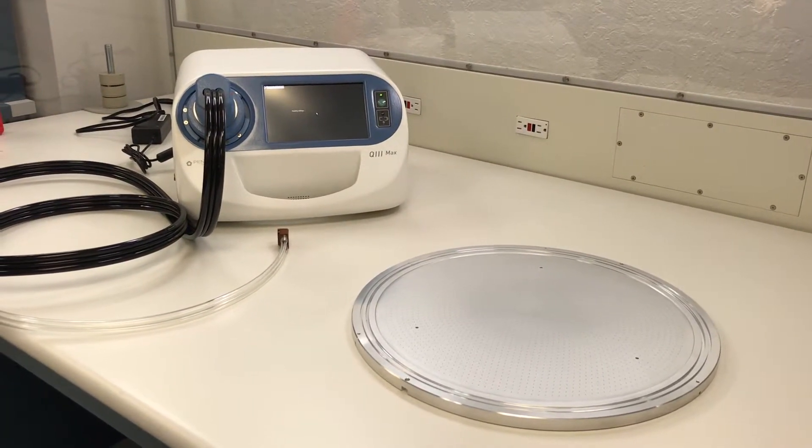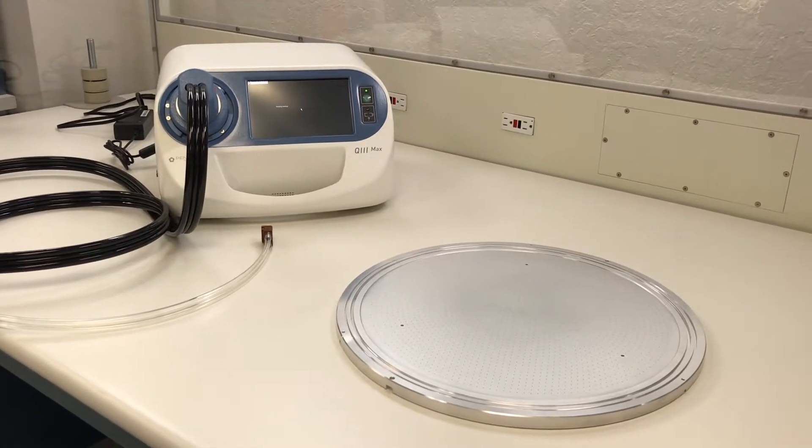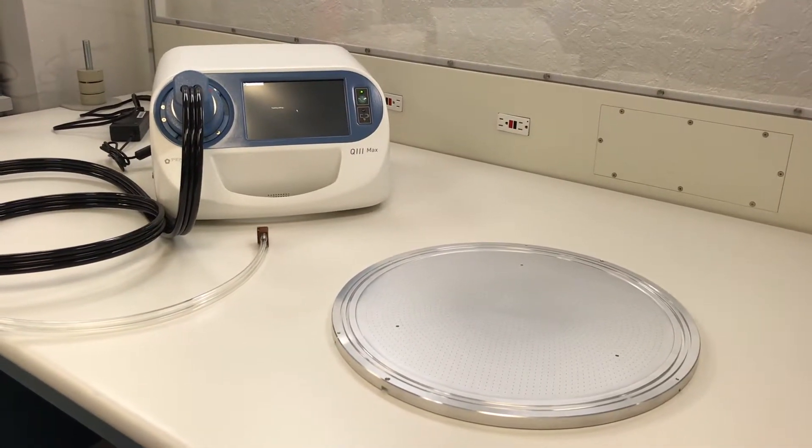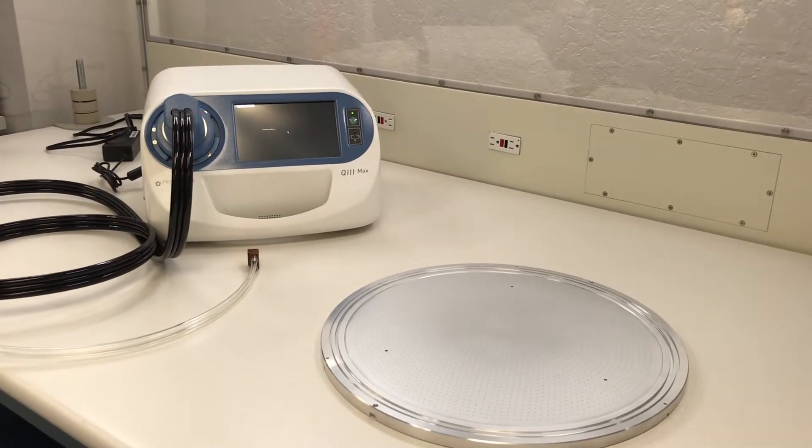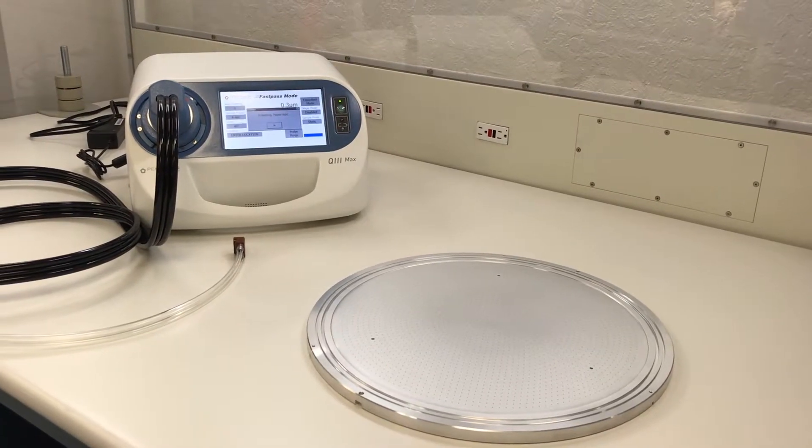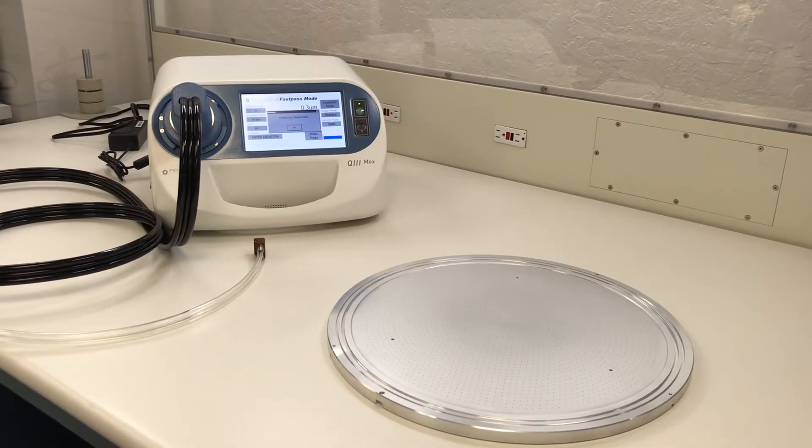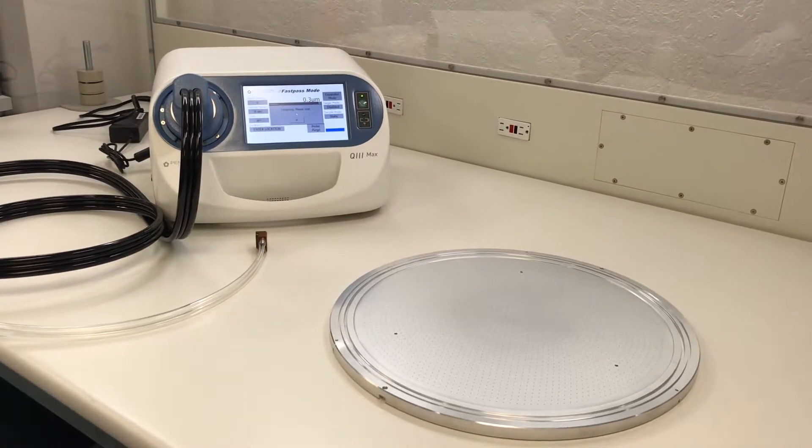The Q3 is the standard for particle detection on critical surfaces. The Q3 Max detects particles down to 0.3 microns or 300 nanometers. This demo is an overview, however to get detailed information please refer to the manual. In this demo we will show how to purge the system and make a few basic measurements.